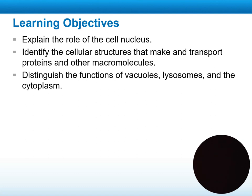In cell structure, we will talk about and explain the role of the nucleus — why it is important and what it contains from the inside. It contains the genetic information that determines the genetic composition for each type of organism, whether we are talking about a plant cell, animal cell, or even human cells. After that, we will identify the cellular structures that make and transport proteins and other macromolecules.